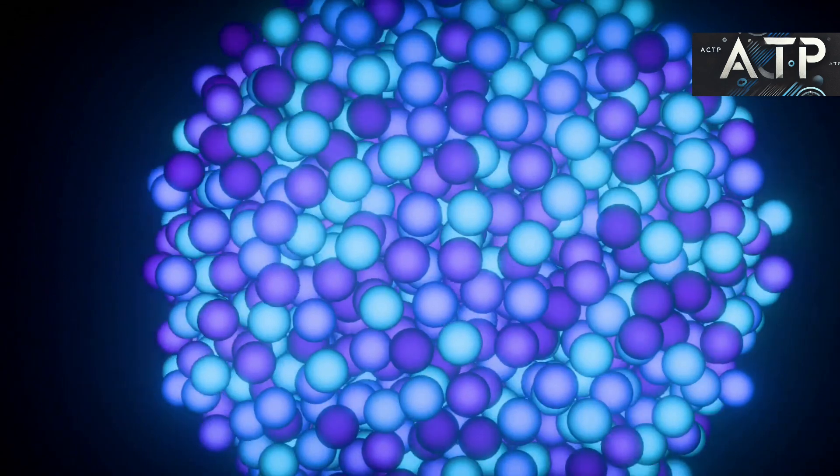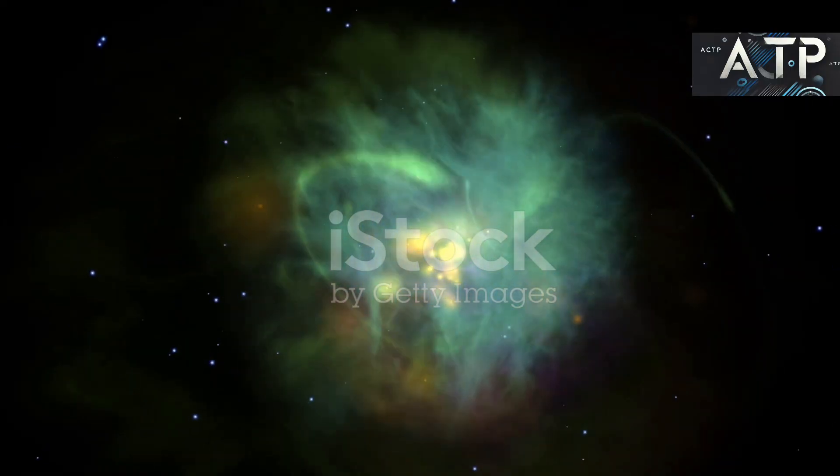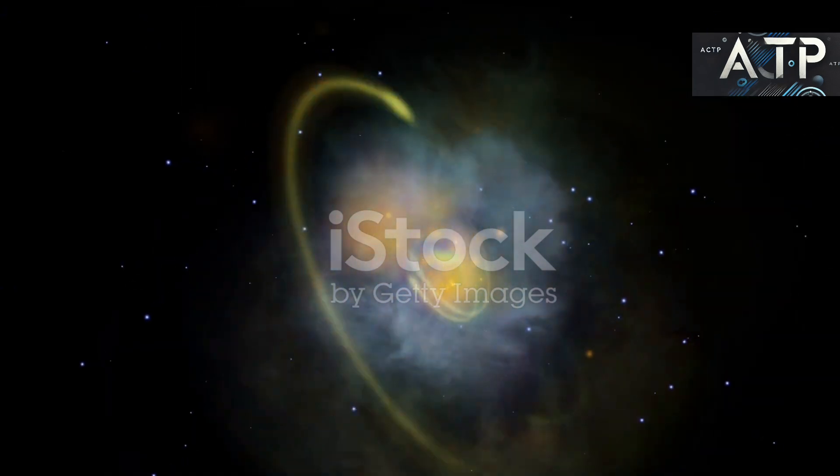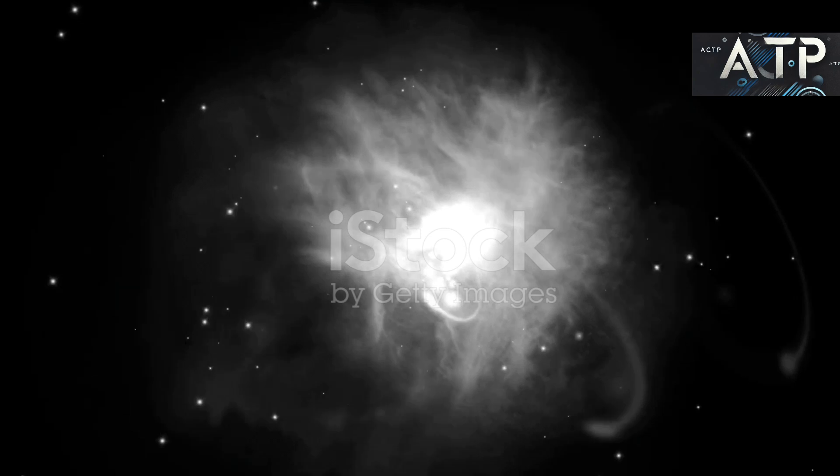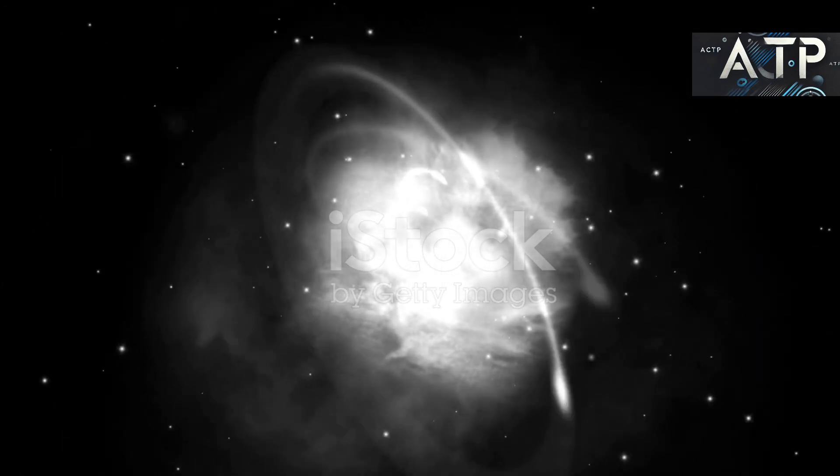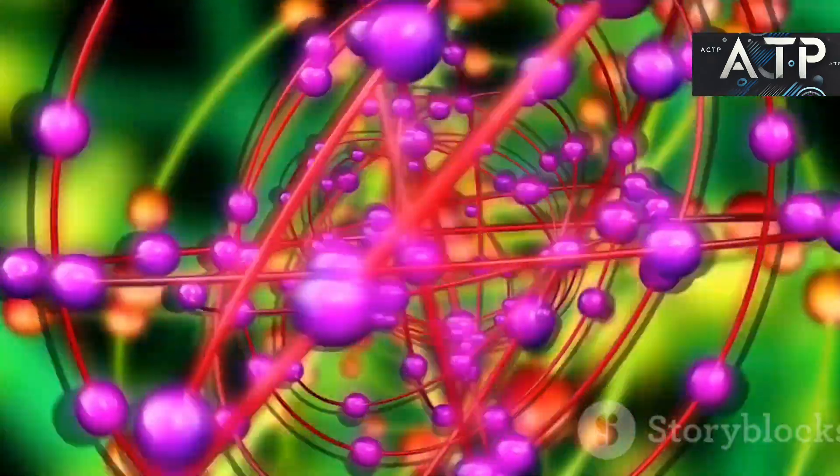Many nuclei, especially those with extra nucleons beyond a magic number, adopt this elongated shape. Oblate pancake shape: Alternatively, some nuclei are squished along one axis, resulting in a shape akin to a flattened sphere or a pancake.